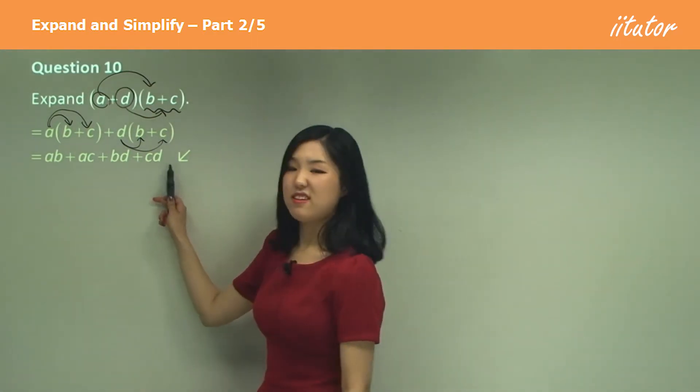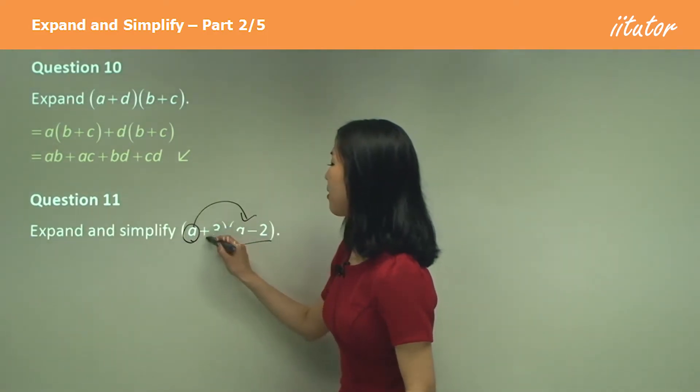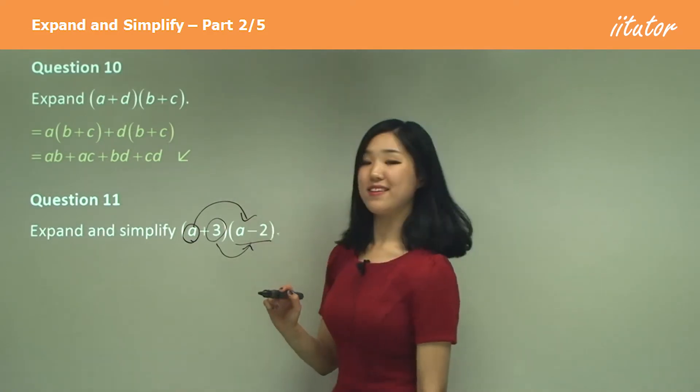And then DC but CD rather. So A times this whole bracket and three times this whole bracket.